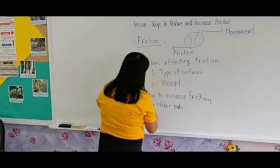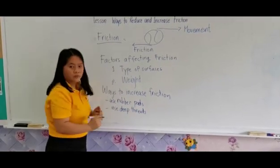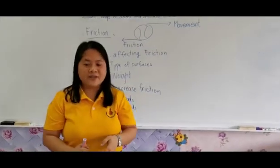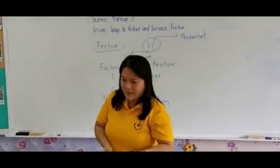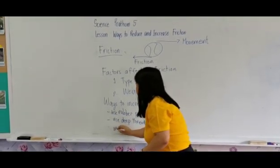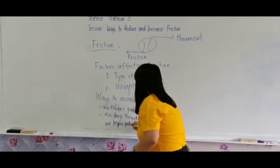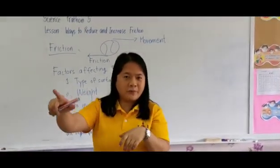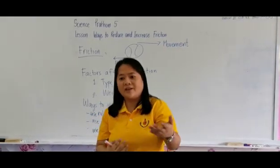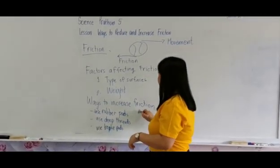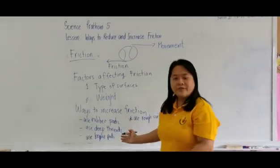Another way to increase friction is to use deep threads — like in car tires, which we already discussed. Car tires have threads, and the soles of your shoes also have threads. You can also use brake pads. When you use brake pads on a bicycle and press the brake, you see the rubber pressing the wheel, which increases friction and ultimately makes you stop — you slow down and then stop. And as I said, you can use rough surfaces, because the rougher the surface, the higher the friction.